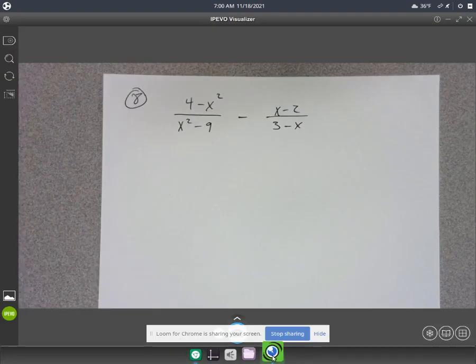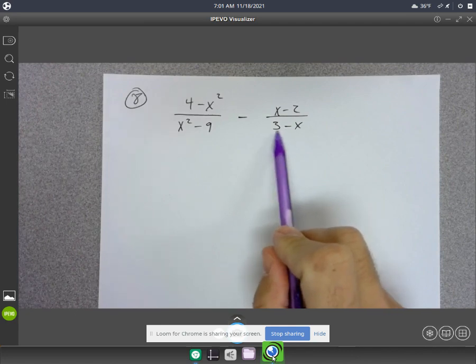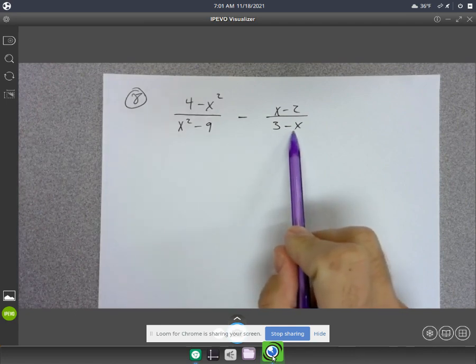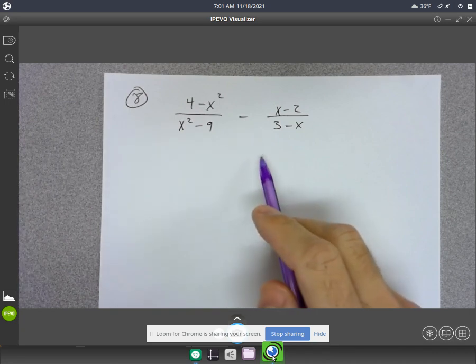All right, now for number 8. Number 8 is kind of tricky. This is part of the reason why it's tricky, because of the 3 minus x. This is the other reason it's tricky, because of the subtraction.